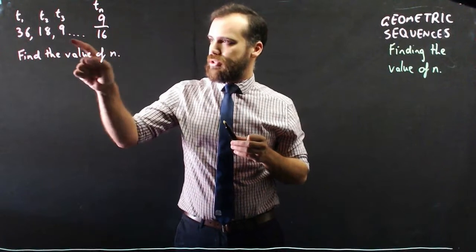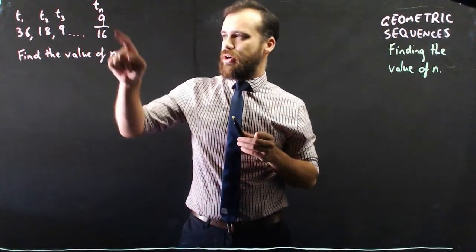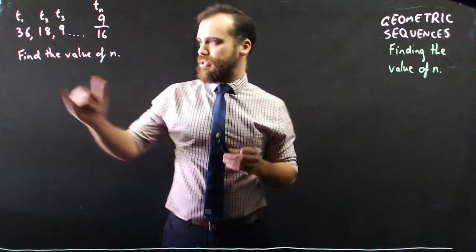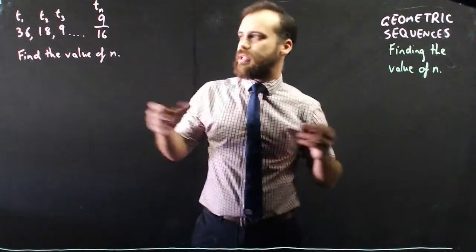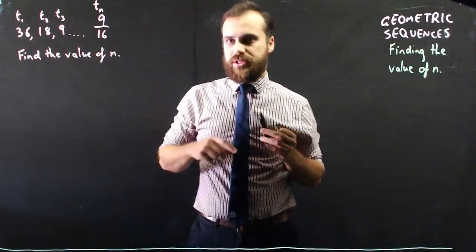And we've got dot, dot, dot, that means a bunch of space, and then term n is 9 over 16. And so the question is, find the value of n. Really what we're saying is, how many terms until we get to the term 9 on 16.